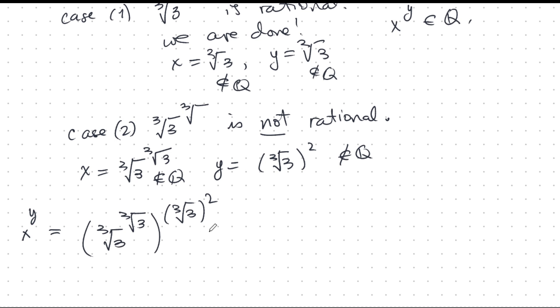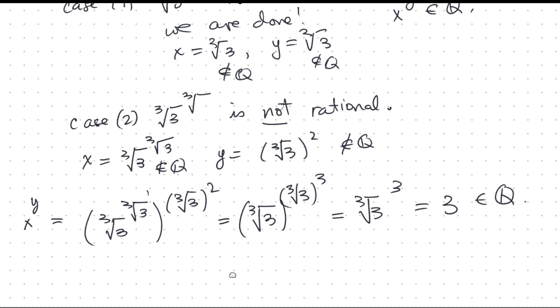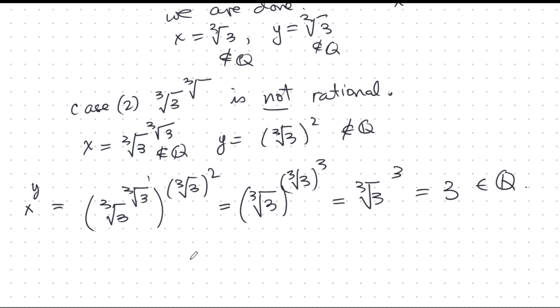So let's raise them to the power of each other. We can now bring this inside and that multiplies the powers like this. I got a power of cube root 3 here and a 2 here, so I get cubed here. But that is just cube root 3 to the power of 3, and that's 3, and that's in Q. So we are done. We have x power y is in Q. Either way, one or the other is going to be rational. So we have a proof of existence.